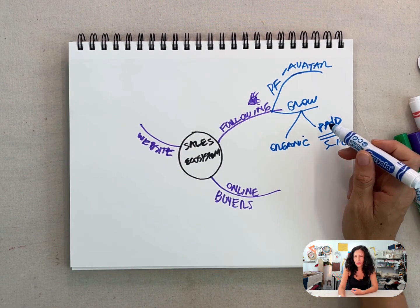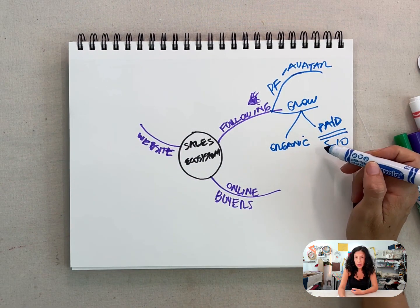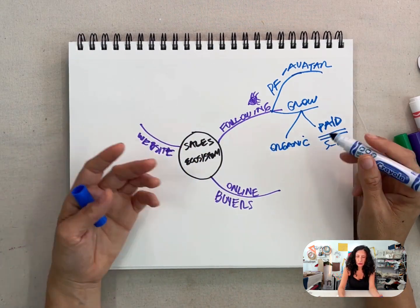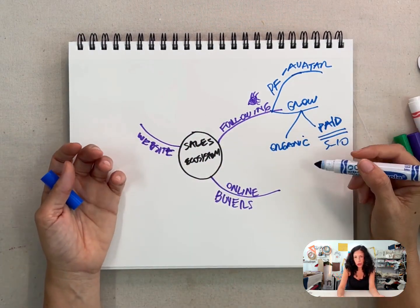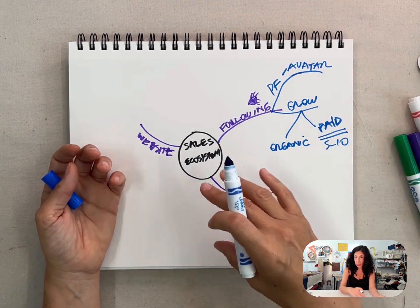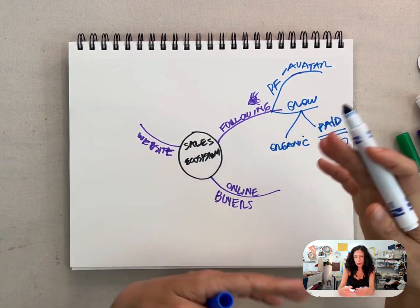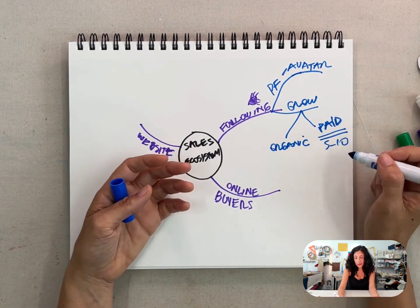But even boosting posts, you just have to find the right posts. But even boosting, there are two ways to do ads, by the way. You can do the complicated way if you know, which is going in the ads manager, which is on Facebook from the Meta ads, and you do the whole process there.